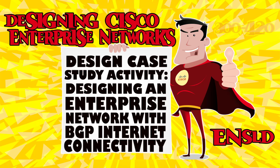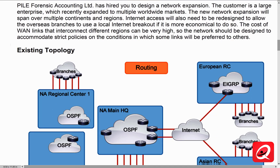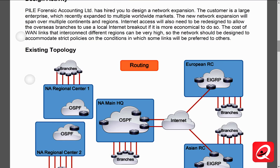Let's get into section number seven. This is a design case study activity. We're going to be designing an enterprise network with BGP and internet connectivity. The goal of this particular design activity is to learn how to consider customer requirements and how to design a BGP network that is based on those particular requirements.